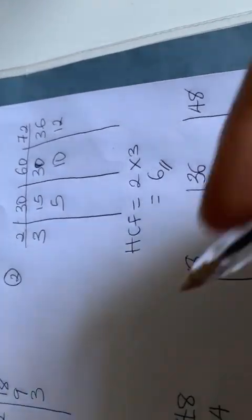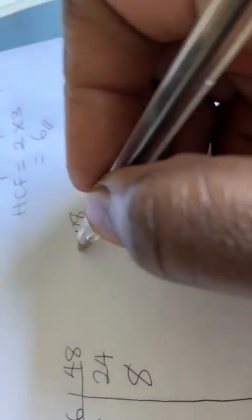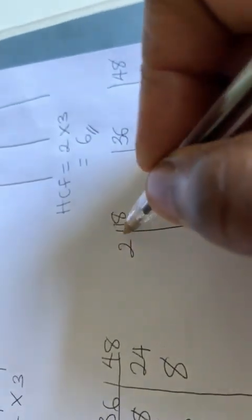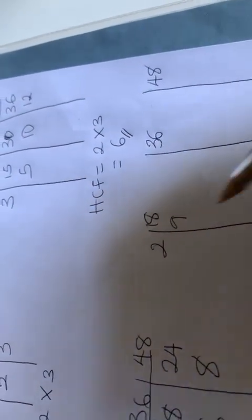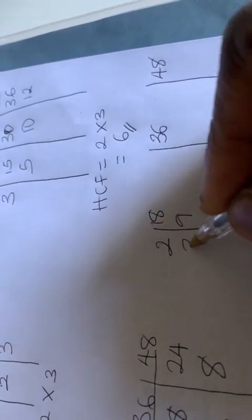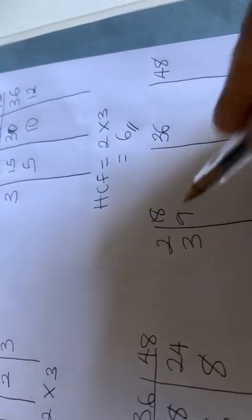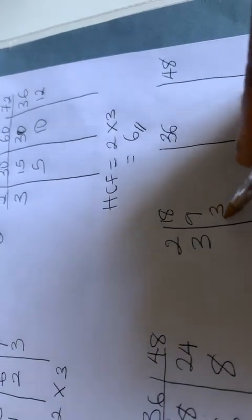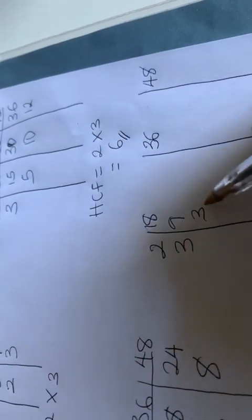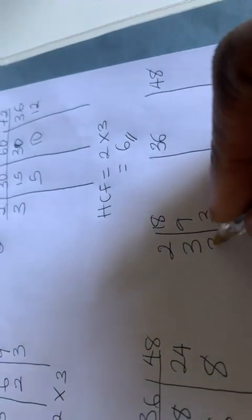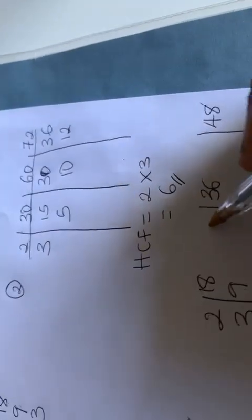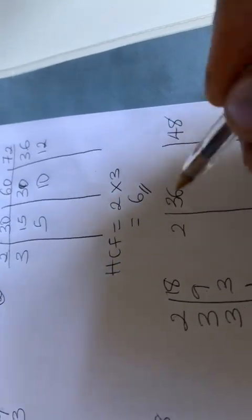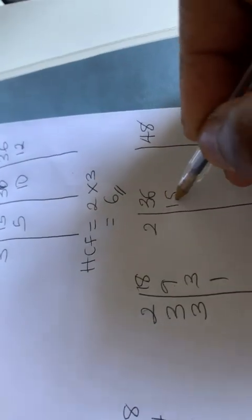Let's try the separate method. Two can go into 18 — two into 18 is nine. Two can't go into nine, so let's try three. Three into nine is three. Three can still go — three into three is one. For 36, two can go into 36 — two into 36 is 18 times.